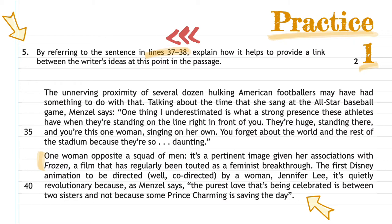The sentence reads: 'One woman opposite a squad of men. It's a pertinent image given her associations with Frozen, a film that has regularly been touted as a feminist breakthrough.' We need to break this into two sub-sentences, usually done with a comma or, in this case, a colon. We see 'a squad of men' — this perhaps falls back to the previous passage, which mentions 'the unnerving proximity of several dozen hulking American footballers', and Menzel saying: 'you're this one woman singing on your own. They're huge standing there and you forget about the world because they are so daunting.'